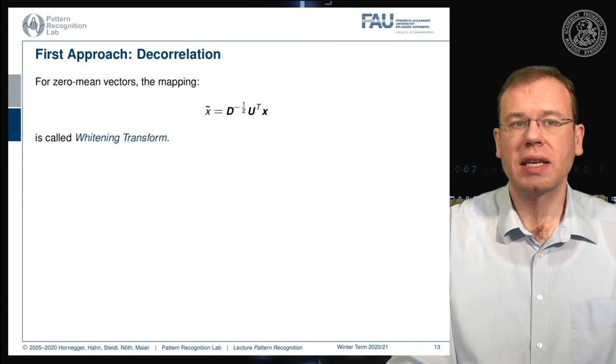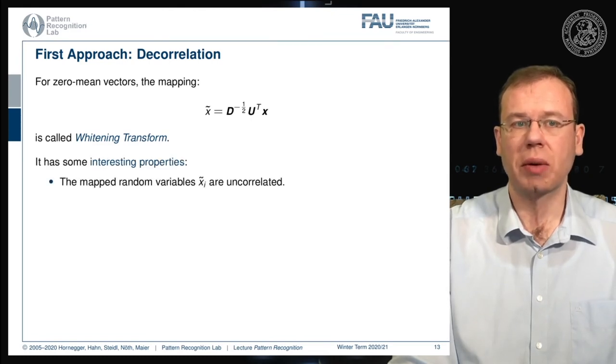Now, actually, if we have zero mean vectors, this mapping is also known as the whitening transform, because we essentially map everything onto a white noise. And this has, of course, interesting properties.